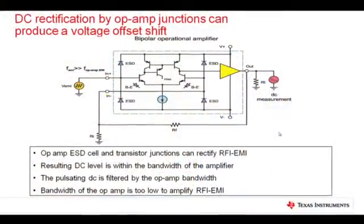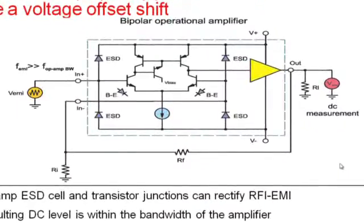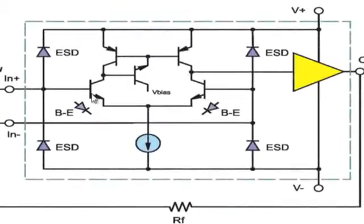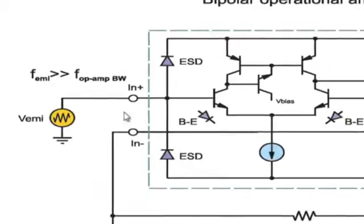The reason that this offset shift occurs is because of rectification internal to the operational amplifier. If we look at a simplified circuit for an op amp, we have the differential input stage — in this case two NPN transistors, though it could be a CMOS or JFET input stage. With the base-emitter and base-collector junctions, we have built-in diodes. There are also ESD protection diodes on the input of the device. Any of these can serve as a rectifier. The RF coming in will be high in frequency — hundreds of megahertz or gigahertz — and is rectified by one or more junctions. The operational amplifier has a low bandwidth relative to that frequency and will filter the pulsating DC resulting from the rectification, and what we see is an amplified DC offset at the output.